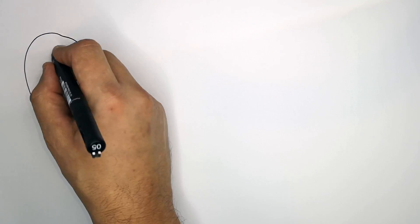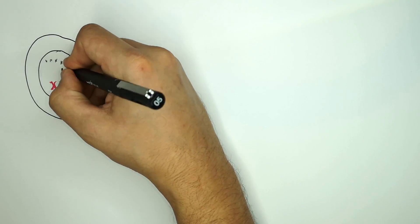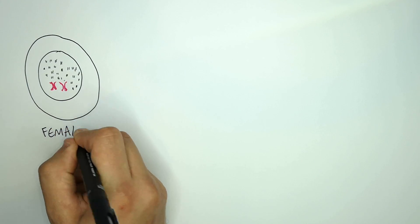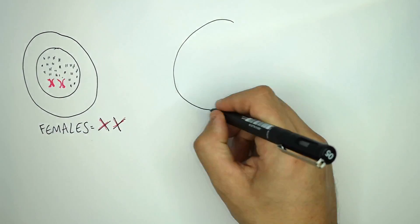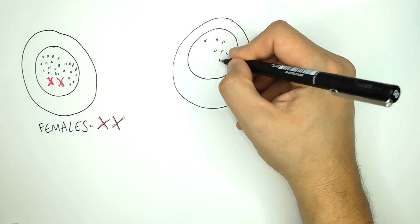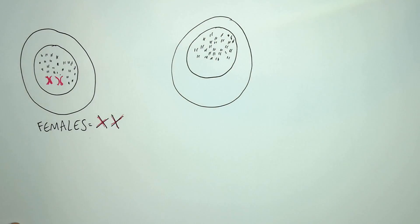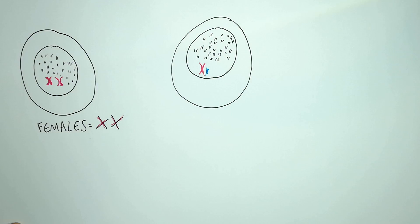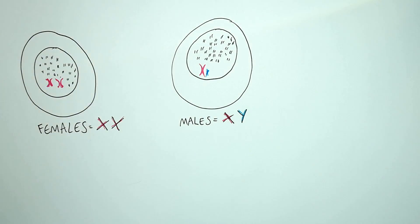What I'm drawing here is a female body cell. They've got 22 pairs of chromosomes plus the XX. So a female has got XX chromosomes, whereas a male body cell also has 22 matched pairs, but instead of XX, the male has got XY chromosomes. So males are XY, not XX like females.